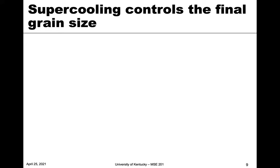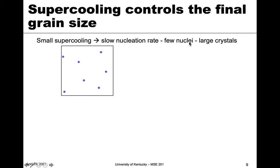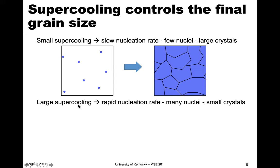Supercooling also controls the final grain size of a material. At low or small supercoolings — small delta T — the nucleation rate and driving force are low, so we get only a few nuclei. In the microstructure, these few nuclei will grow much larger before they impede on each other, because there are only a few grains.